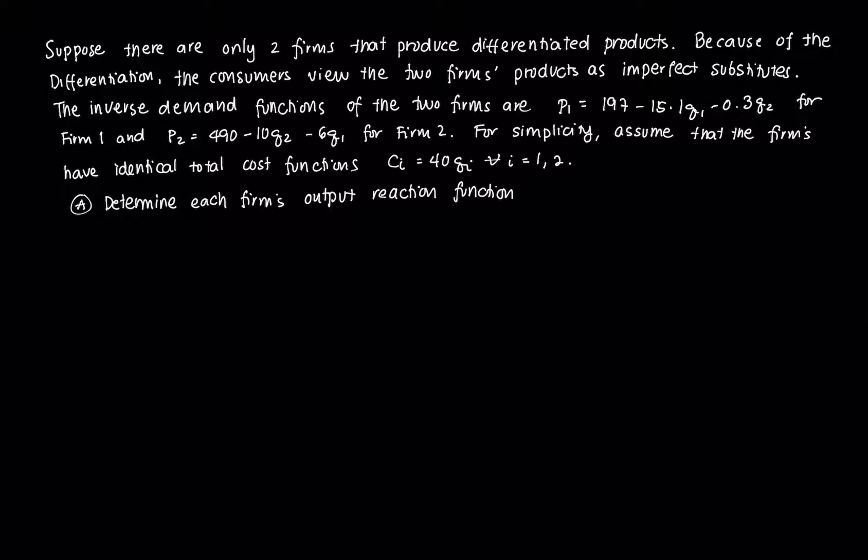Let's go to an example. Suppose there are only two firms in the market and they produce differentiated goods. Because of the differentiation, the products of the firms are like imperfect substitutes. What happens is there are now two demand functions. If you recall our previous Cournot case, there was just one. Now there are two.